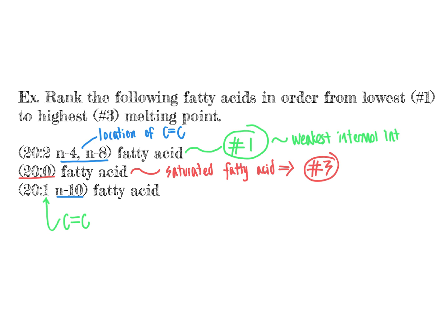Next in line at number two is the unsaturated fatty acid with just one alkene group, sitting between the weakest intermolecular interactions — from multiple carbon-carbon double bonds — and the strongest — from no carbon-carbon double bonds.